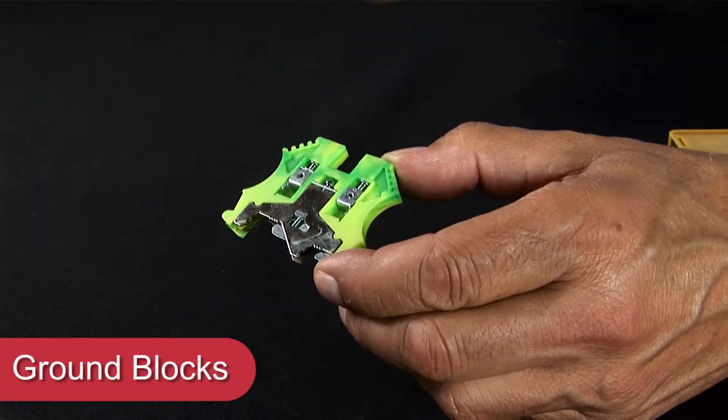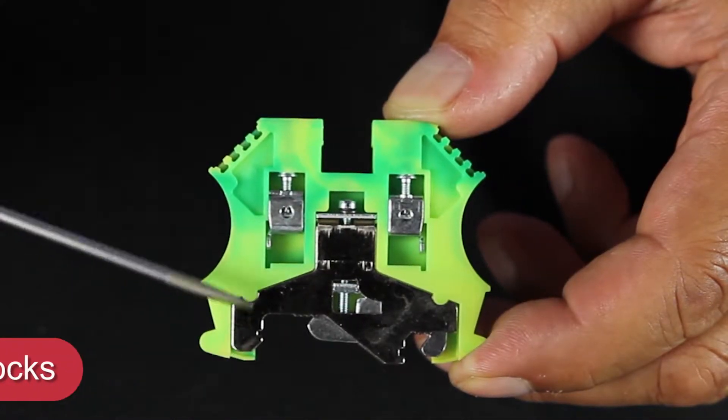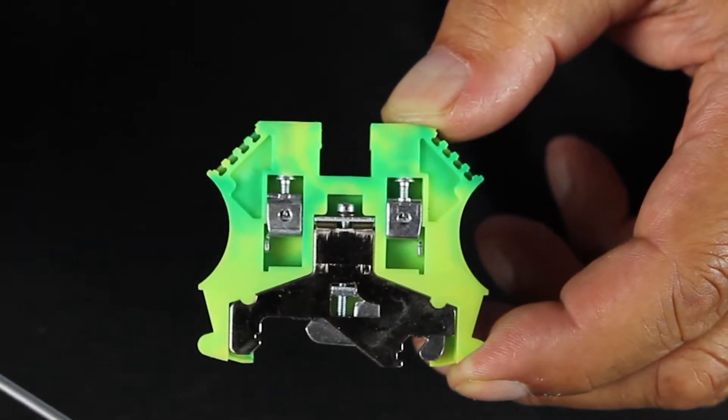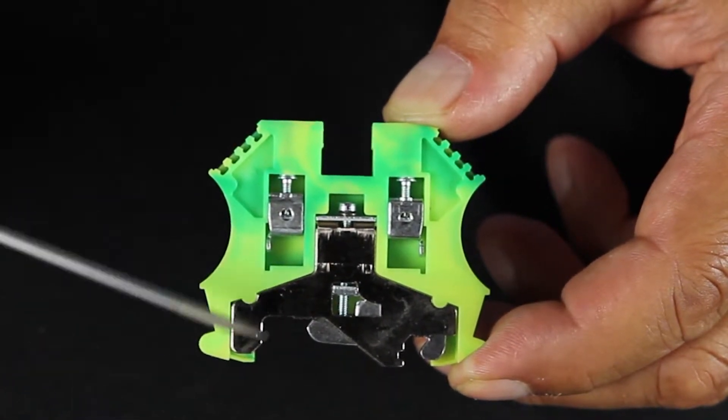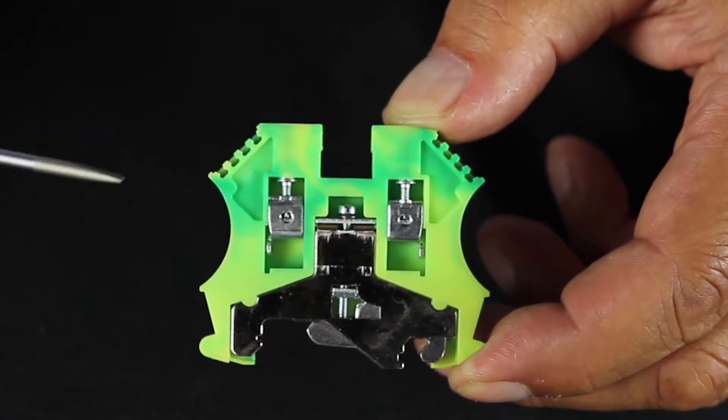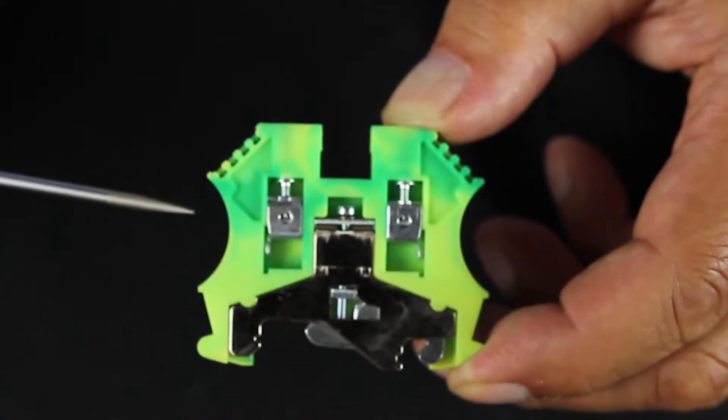We also offer two types of ground blocks. The first features screw clamps. Connect your ground wire to the clamp, which is connected to a metal foot, which connects to your grounded DIN rail.